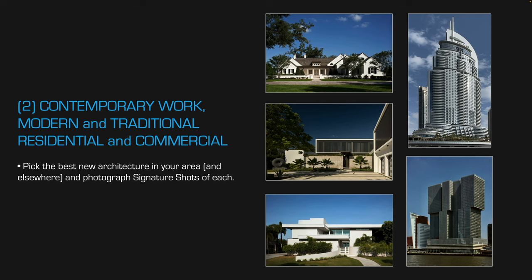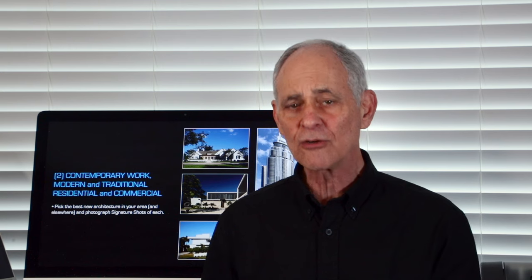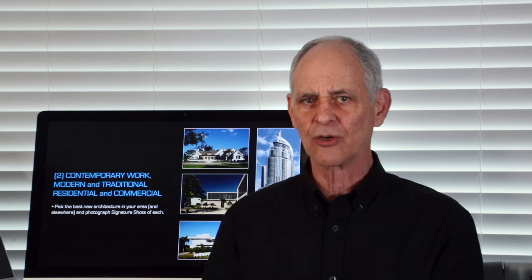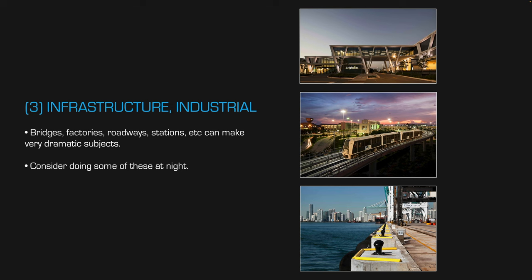Number two is contemporary work — by contemporary I mean things being done right now, whether it's modern design, traditional design, residential work, or commercial work. Find the best architecture in your area and photograph a signature shot of each. Good work begets good work. If you photograph architecture that isn't really wonderful, or maybe urbanistically it's bad, and you show that to a really good architect, they're not going to see through the photo — they're going to look at the ugly architecture and wonder why you photographed that.